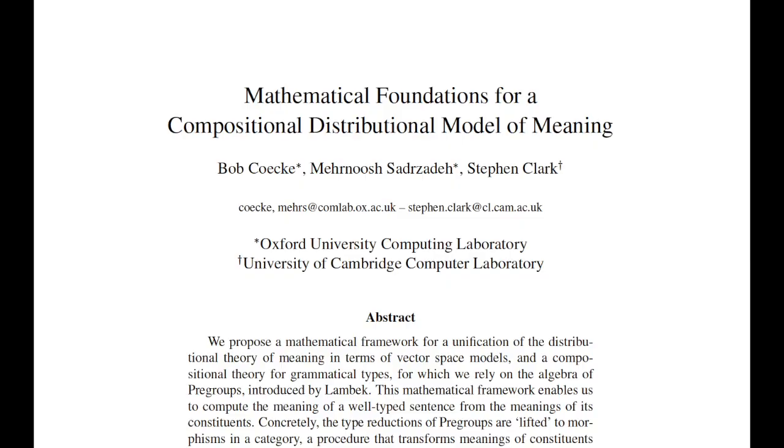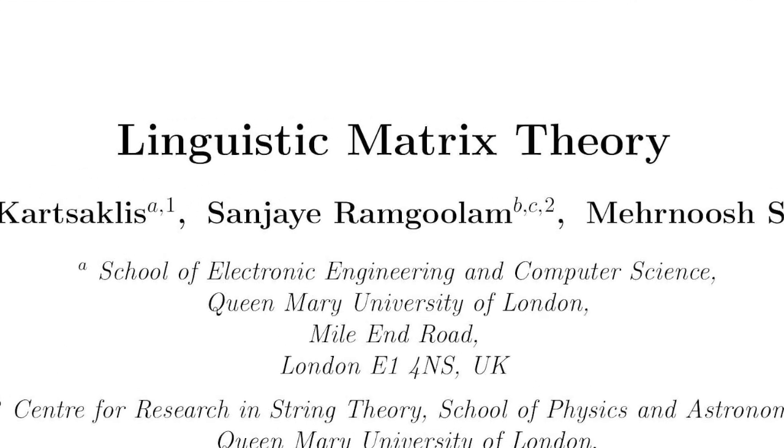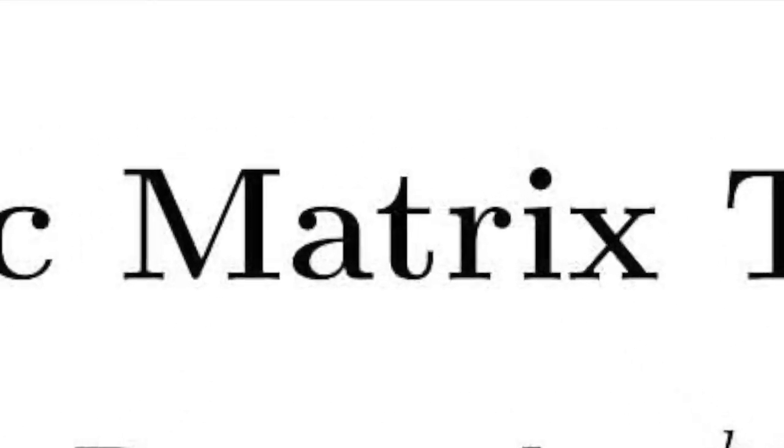That's exactly the problem that my collaborator Mahnush Sadrazadeh, who I worked with along with her collaborators in Oxford a few years ago, were tackling. What they realized is that grammatical composition has a lot of similarity with composition that arises in the mathematics of vectors, matrices, and higher dimensional versions of matrices, which are called tensors.